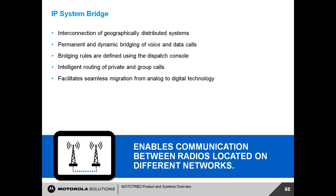System bridging gives the ability to interconnect different locations. A customer may run a Capacity Plus system at one site and a single conventional repeater at another site, but still want to bridge calls across both. The application can integrate a CAP Plus solution as well as a conventional solution and bridge calls amongst those systems. Within a single CAP Plus system, we can also cross-patch calls — when a user comes through on one talk group, the call is cross-patched to another talk group within the same system or out onto a separate system.